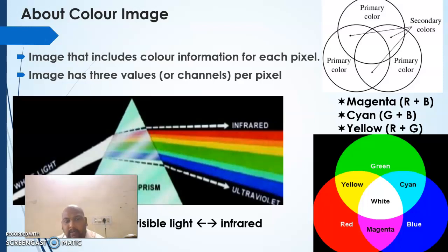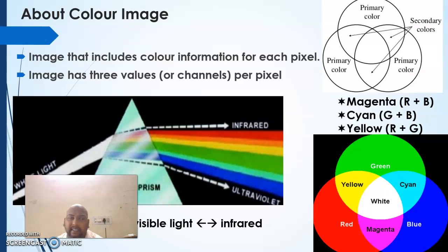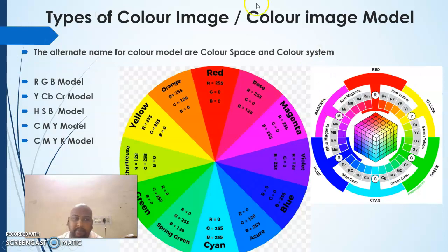A color image is one that includes color information for each pixel. Each pixel will have three values corresponding to the primary colors — red, green, and blue. All the colors in an image are formed due to the combination of these three colors.